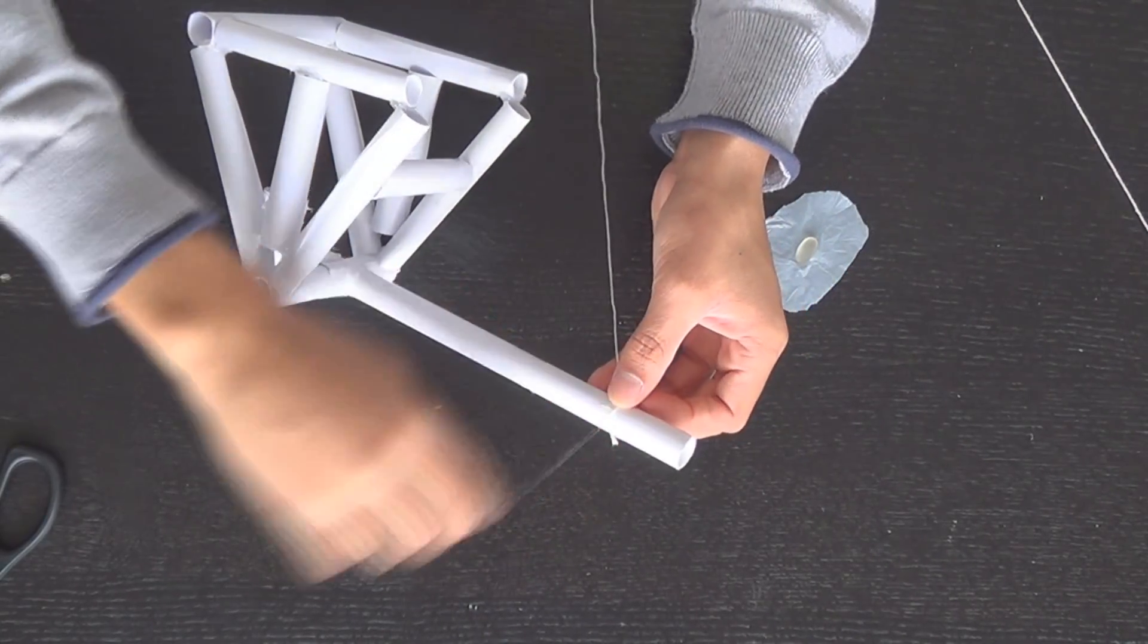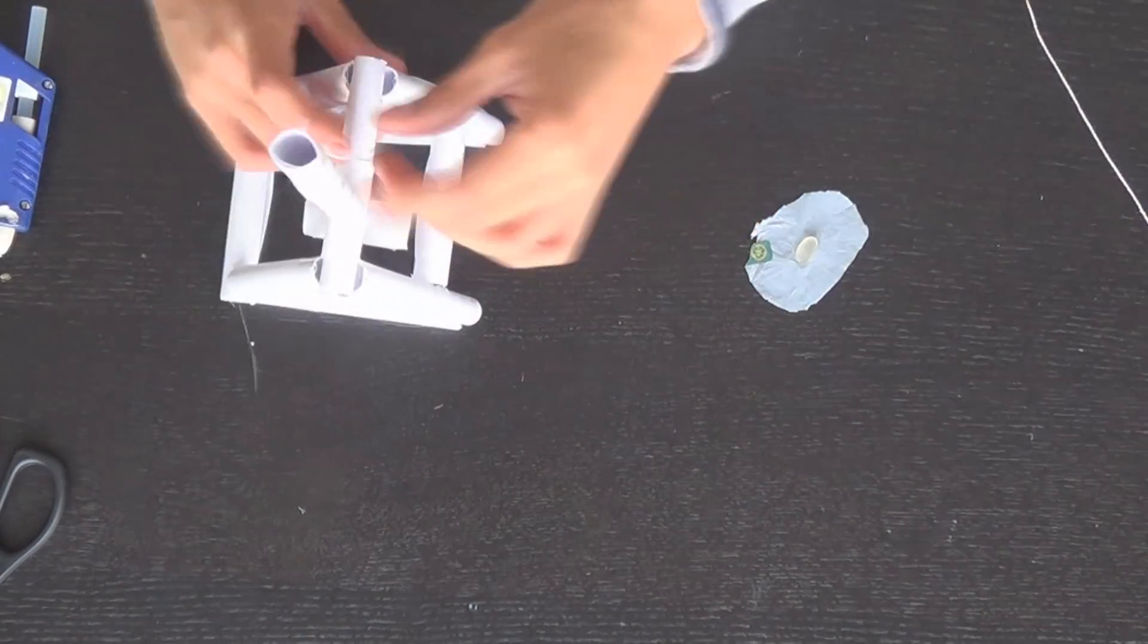Now we're going to glue one end of string around the arm of our trebuchet.